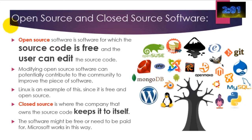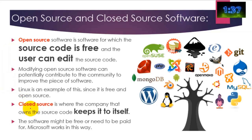Open source software is essentially software that's free to download and whose source code can be edited. You might download something like Linux and go into the source code to change and edit it so it does exactly what you want. Closed source software is different — Microsoft is a typical example. You buy the software but you can't change it; Microsoft can, but you can't. Typically you pay for closed source software, and that's the real difference between open source and closed source.